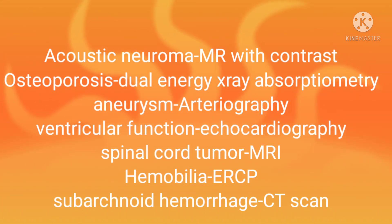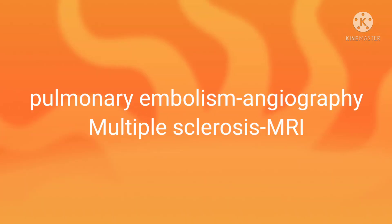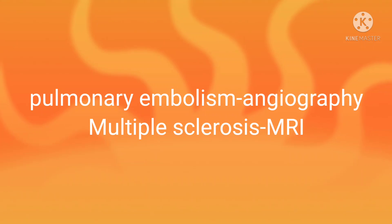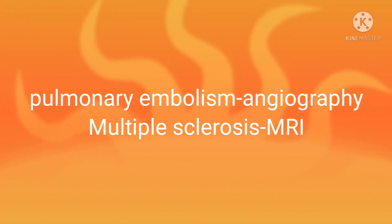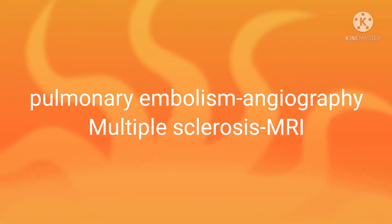Subarachnoid hemorrhage is by CT scan. Pulmonary embolism is diagnosed by angiography. Multiple sclerosis is diagnosed by MRI.